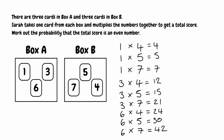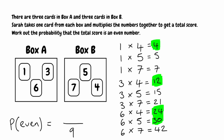The question asks for the probability that the total score is even. There are 9 combinations in total, so the fraction is out of 9. Going through the scores: 4 is even, 5 is odd, 7 is odd, 12 is even, 15 is odd, 21 is odd, 24 is even, 30 is even, and 42 is even — giving 5 even results. So the probability that the total score is even is 5/9.